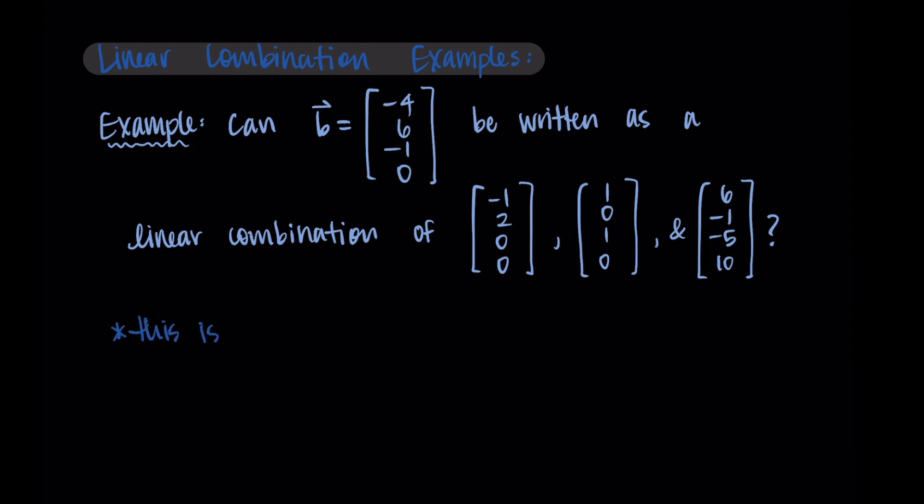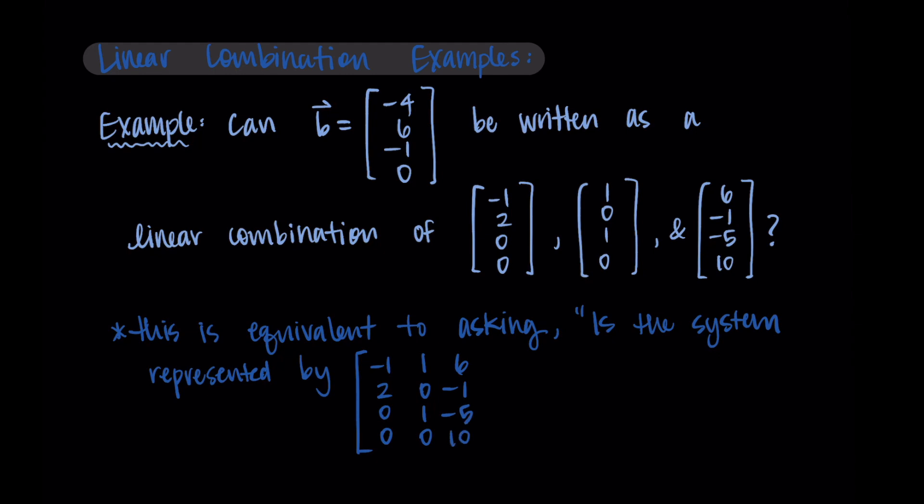So in these cases, we can think of this as an equivalent question. This is equivalent to asking: is the system represented by the augmented matrix consistent? And the augmented matrix has columns that are made from the three vectors, and then the augmented part is the b vector. So if this matrix corresponds to a consistent system, then there will be solutions that make it such that we can use a linear combination of these three vectors to write b.